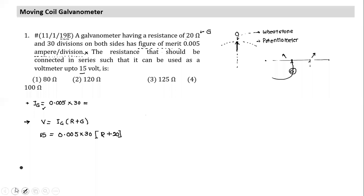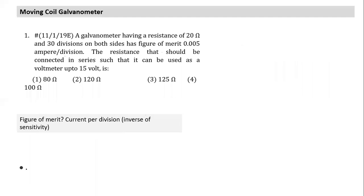There are some tricky questions as we go along. Figure of merit is current per division — the inverse of sensitivity. Keep that in mind and the question can easily be solved.